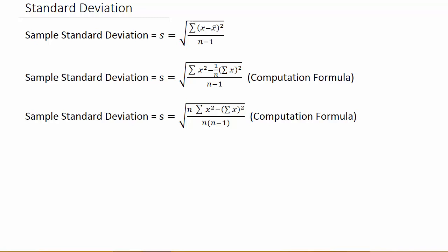In this video I'm going to show you how to calculate the standard deviation — the sample standard deviation. Here's the formula: S is equal to the sum of X minus X-bar, squared. X-bar is the sample mean, divided by N minus 1. This is the formula, and you can use this formula to calculate the standard deviation.